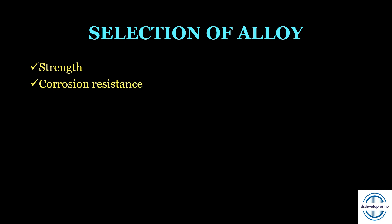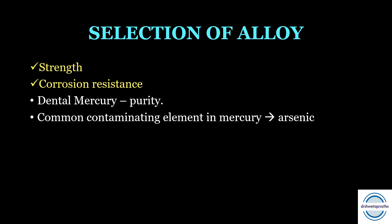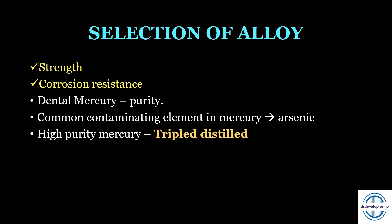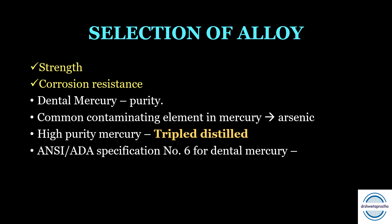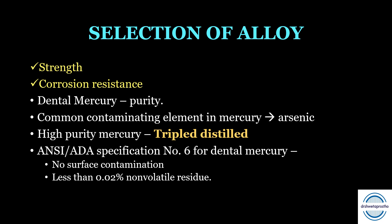The first step is selection of alloy. Two prerequisites: it should have good strength, especially high resistance to marginal fracture, and second is corrosion resistance. For mercury, the only requisite is its purity. The common contaminating element is arsenic, which can cause pulpal damage and affects physical properties. High purity mercury is known as triple-distilled. ADA specification number six states there should be no surface contamination and less than 0.02% non-volatile residue.